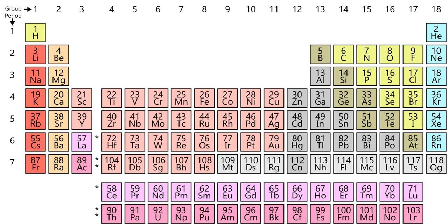Although scandium and yttrium are always the first two elements in group 3, the identity of the next two elements is not completely settled. They are commonly lanthanum and actinium, and less often lutetium and lawrencium. The two variants originate from historical difficulties in placing the lanthanides in the periodic table, and arguments as to where the F-block elements start and end. It has been claimed that such arguments are proof that it is a mistake to break the system into sharply delimited blocks. In December 2015 an IUPAC project was established to make a recommendation on the matter.